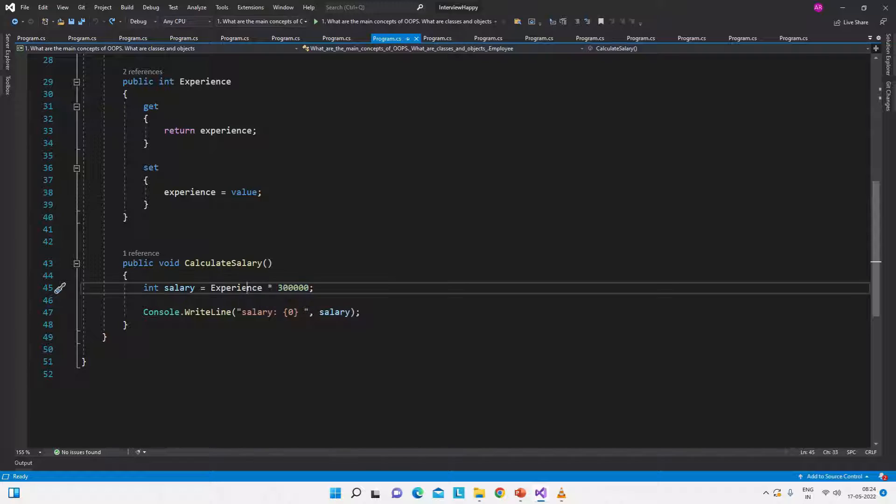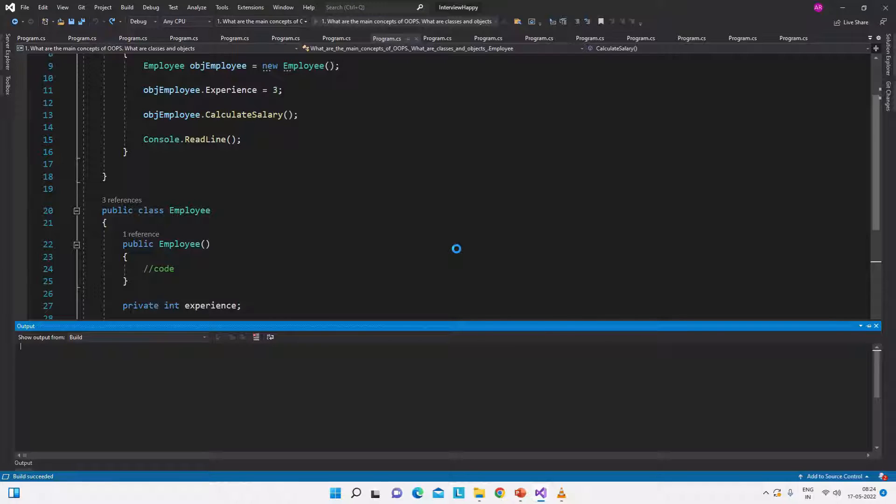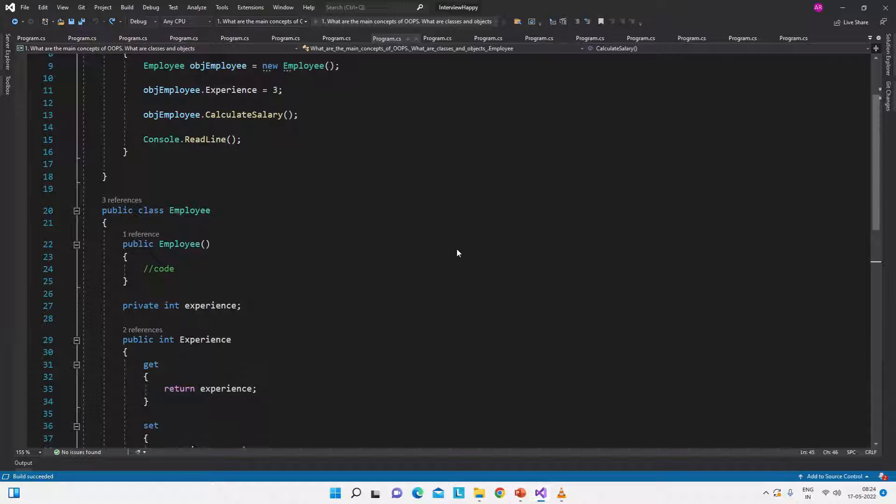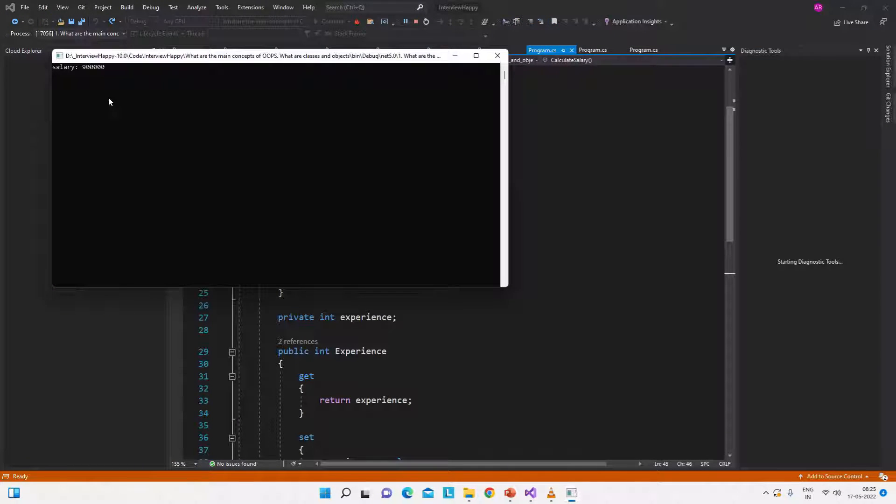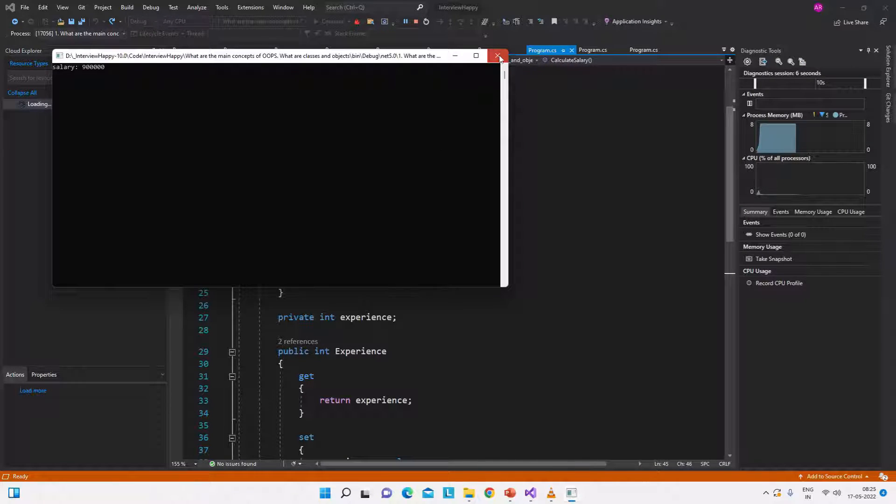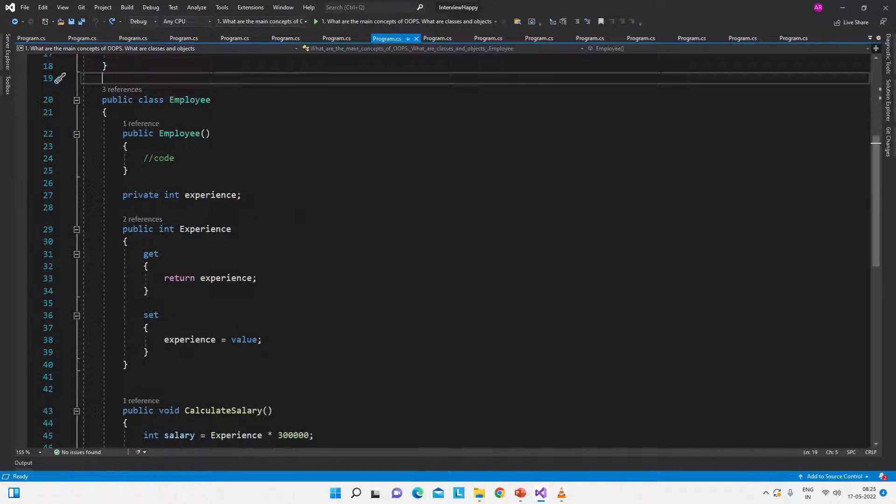And when this calculateSalary method will run, it will give this output: experience into 300,000 or 3 lakhs. So experience is 3 here, so the output will be 900,000. So this is the output.